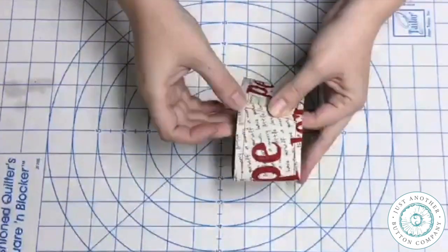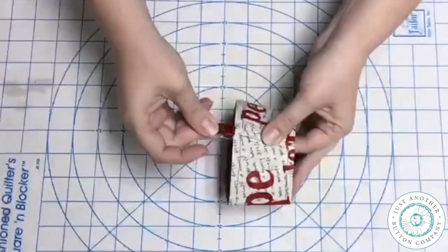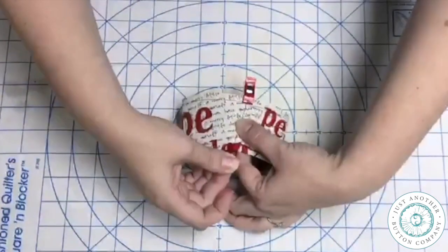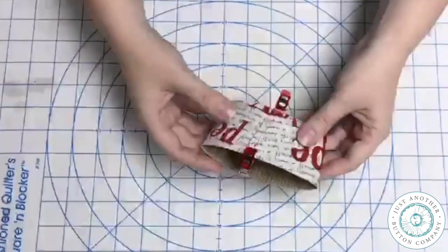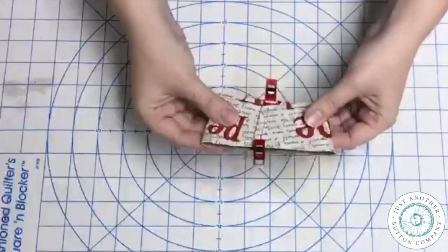Overlap it just a bit and then I'm going to use clips. These are Clover Wonder Clips. I'm going to hold mine together and it looks like it's the right shape again.